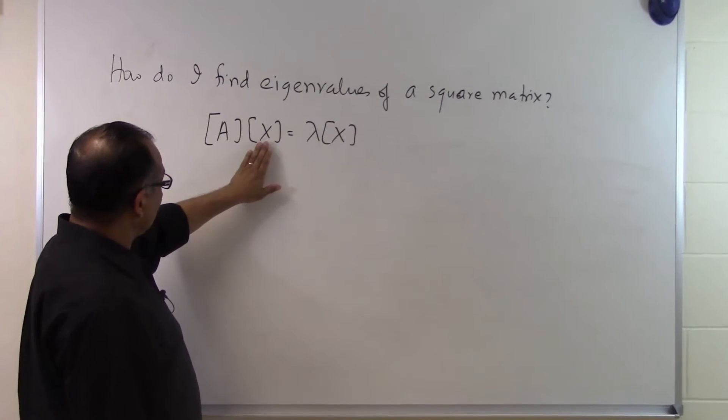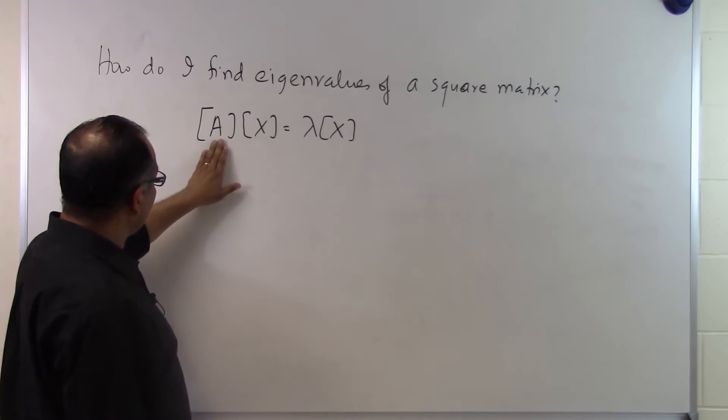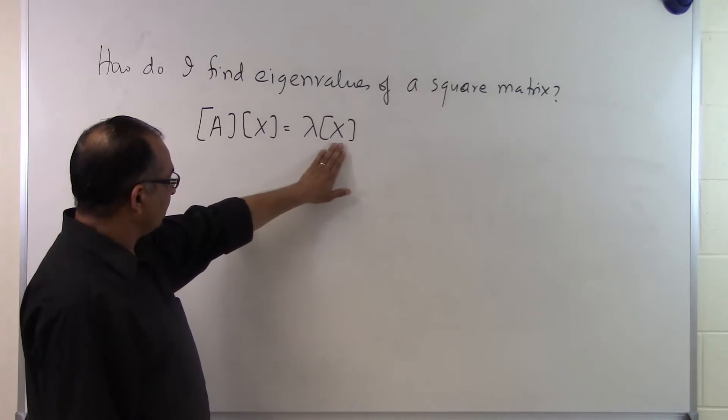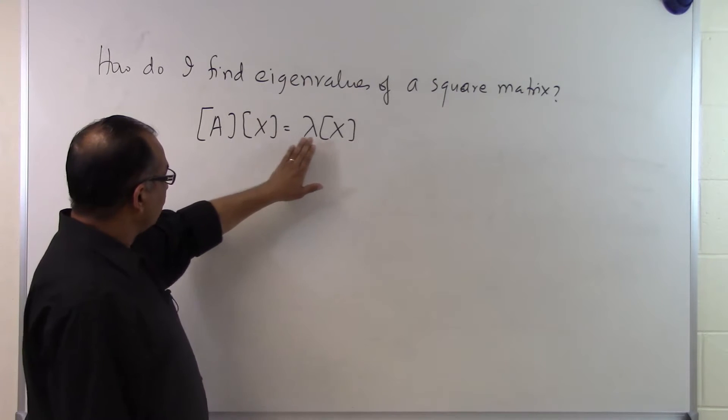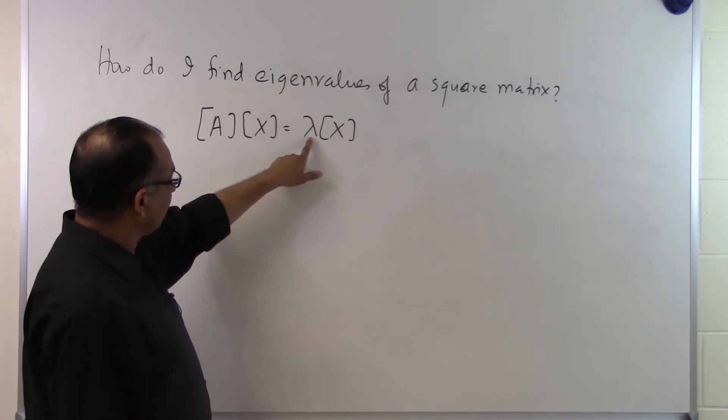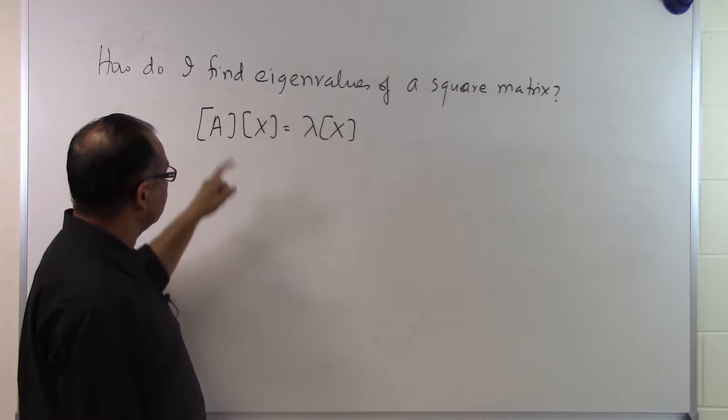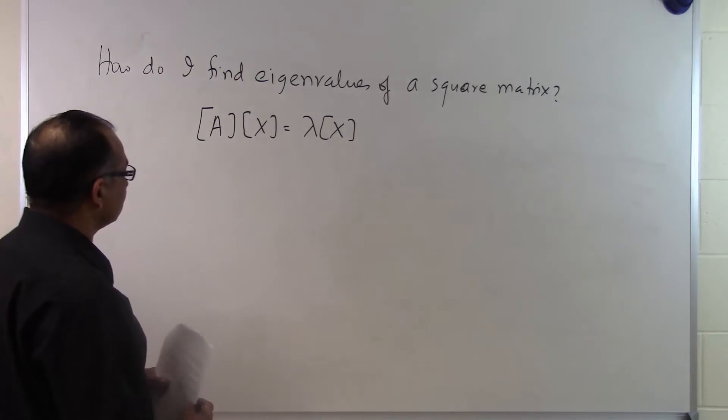So you're looking at a non-zero column vector which, when you multiply by A, turns out to be some scalar lambda times the column vector x. What we want to do is find out what is this lambda. How do I find the eigenvalues of this square matrix?